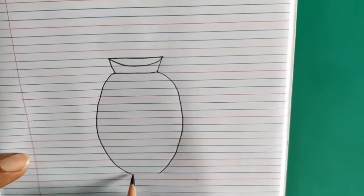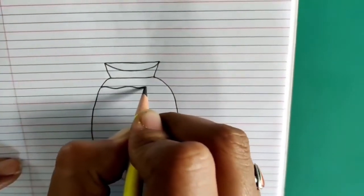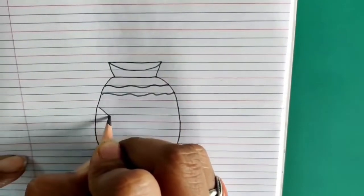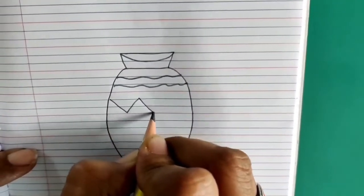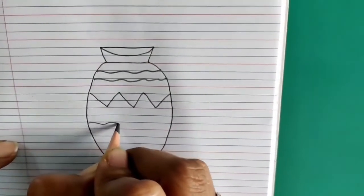And join it with small half circle. Now inside that draw two curved lines. From here draw slanting lines. Again draw two curved lines.